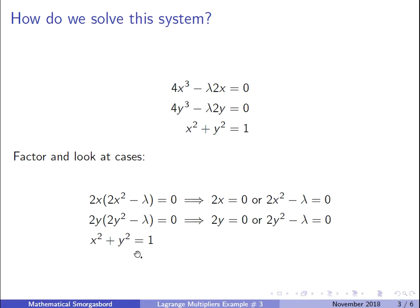Combined with the constraint x² + y² = 1, we have four cases to check: (1) 2x=0, 2y=0; (2) 2x²−λ=0, 2y=0; (3) 2x=0, 2y²−λ=0; (4) 2x²−λ=0, 2y²−λ=0 — each paired with the constraint. We'll look at each case and see what solutions arise.